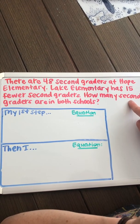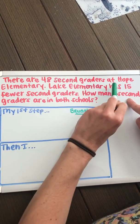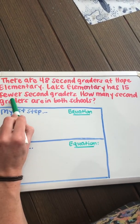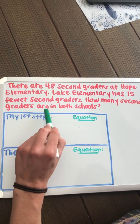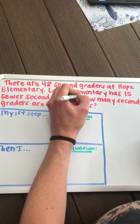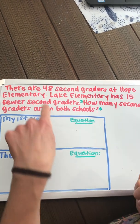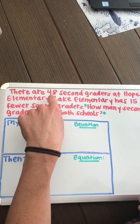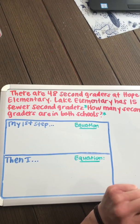Let's read the story problem for today. There are 48 second graders at Hope Elementary. Lake Elementary has 15 fewer second graders. How many second graders are in both schools? The question is asking how many second graders are in both schools. If I'm not careful, I might try to add 48 and 15, and that won't work. I might also try to subtract 48 and 15 and be done, and that also won't work. This is a two-step problem.